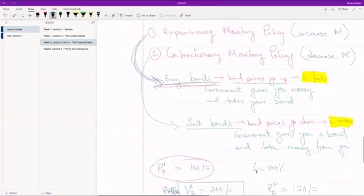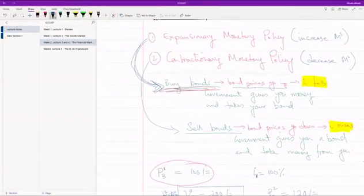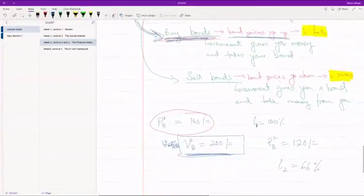So you see, government starts to buy bonds. When they buy bonds, they increase the price of the bond. In our example, price was 100, it went up to 120. But the value of the bond is not changing. As a result, interest rate has fallen.